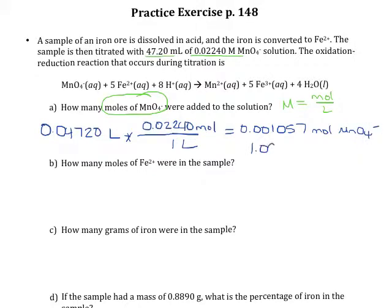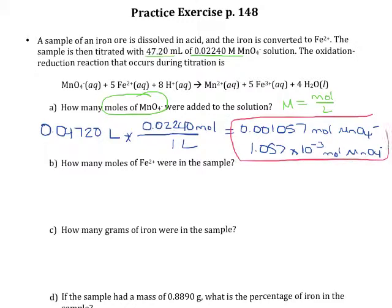It may be easier to write that in scientific notation. So that's the answer for the first part. We have used a concentration and a volume to figure out moles of one of our reactants. Now they're asking us about moles of iron. We should see that this balanced reaction gives us the stoichiometric, or mole, relationships between these two substances.